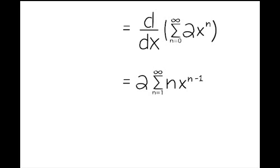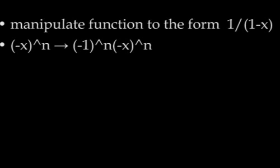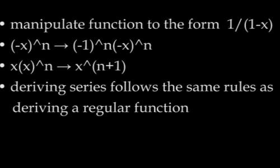Let's review what we have learned today. We have learned that to represent a function with a power series, you must manipulate the function to the form 1 over 1 minus x. We have learned that you should factor out a negative expression to the n by factoring out negative 1 to the n. We've learned that you can combine like bases by adding their exponents. We've learned that deriving a series follows the same chain rule as deriving a regular function.